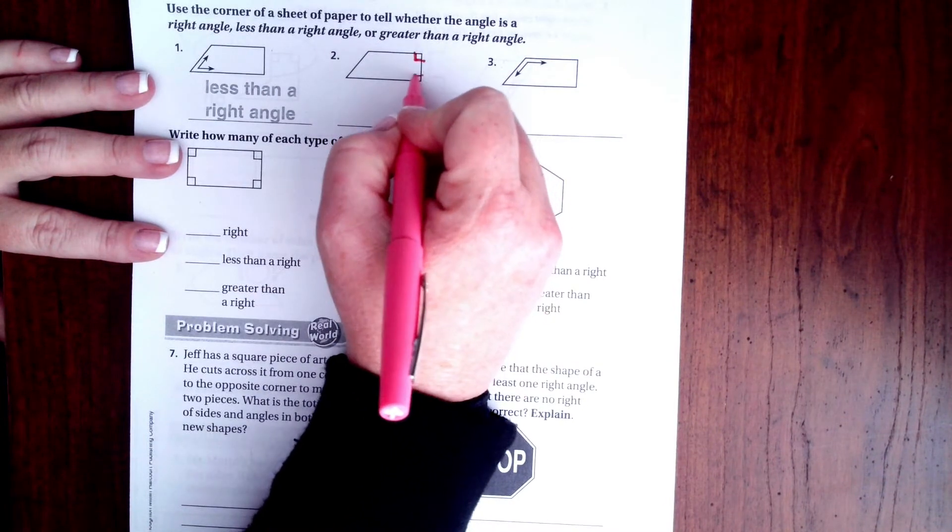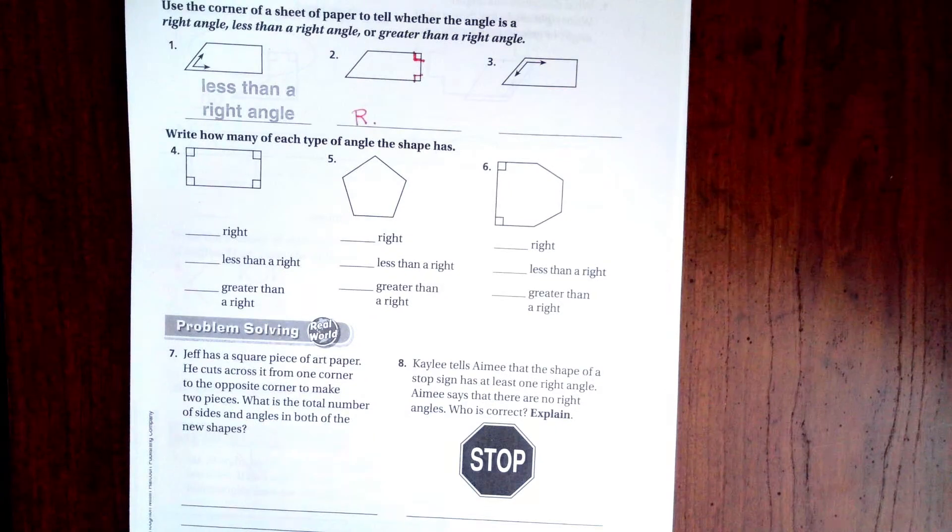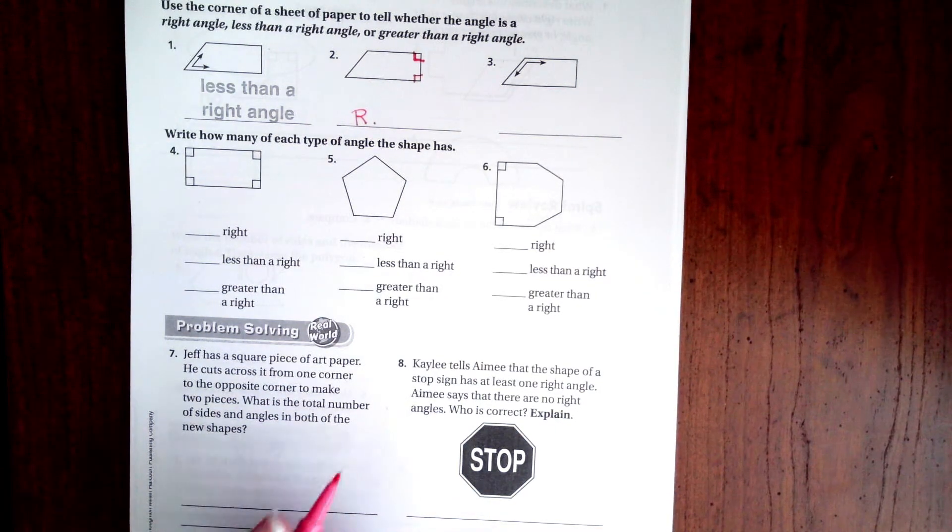So this one, anytime that you see these little boxes, that means that it's a right angle. Every single time you see those boxes, that's a right angle.